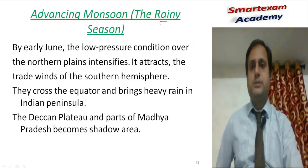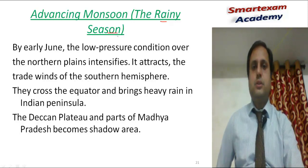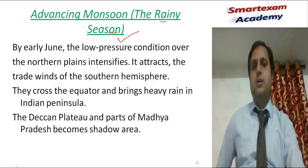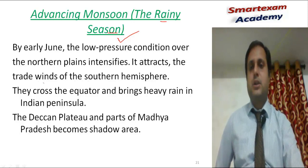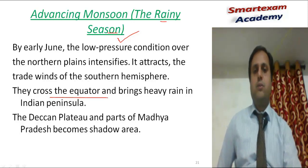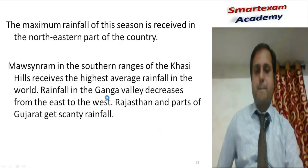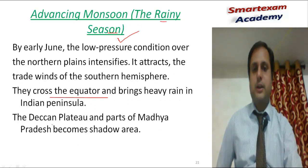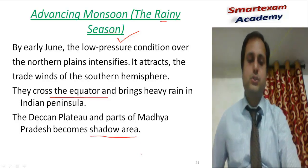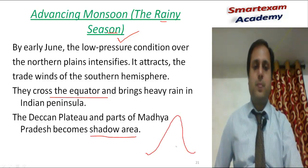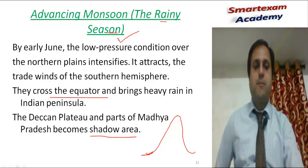Advancing monsoon, or the rainy season, starts into India by early June. Because of the low pressure area over mainland India, it attracts the trade winds — the south-eastern or south-western winds — which cross the equator and bring heavy rainfall over India. During the rainy season, the Deccan Plateau and parts of Madhya Pradesh become the rain shadow area.